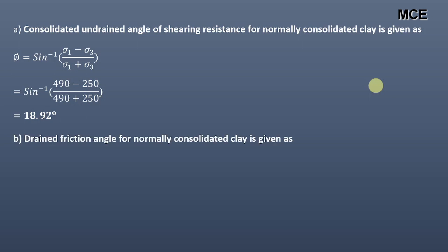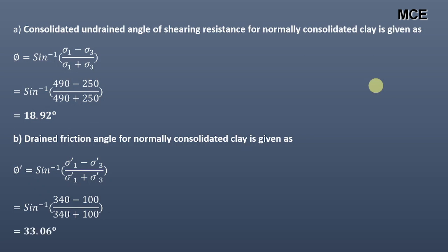The drained friction angle for normally consolidated clay is given as φ' equal to sine inverse of (σ1' minus σ3') divided by (σ1' plus σ3'). Putting the values of σ1' and σ3', we get the value of φ' equal to 33.06 degrees.